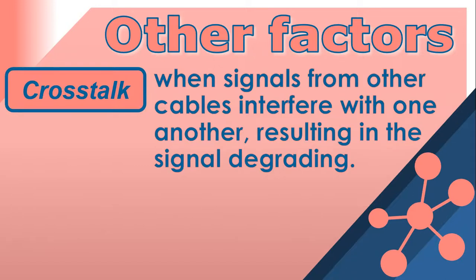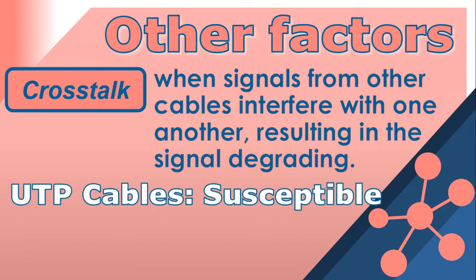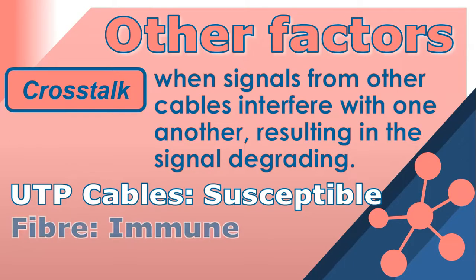Crosstalk occurs when signals from other cables interfere with one another, resulting in signal degradation such as loss or corruption of data. UTP cables are more susceptible to crosstalk than fiber cables because they use copper wires, which are more prone to electric interference. Fiber cables are immune to crosstalk.